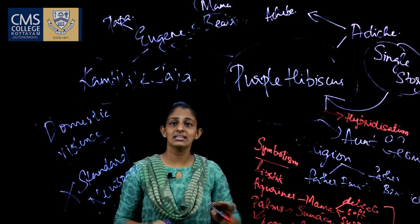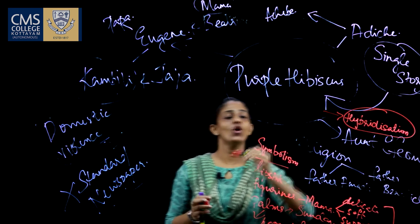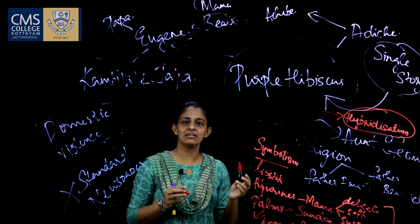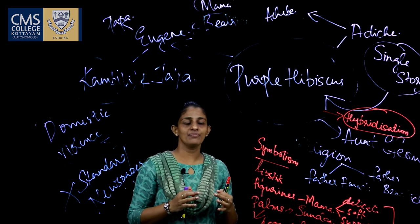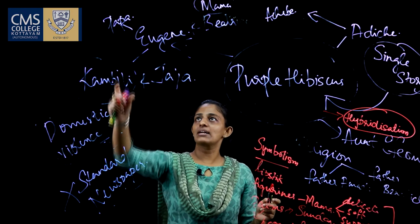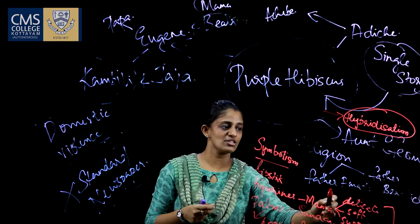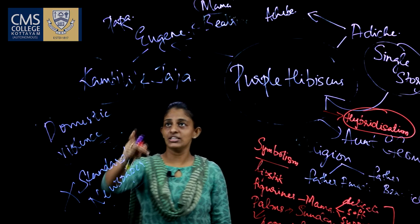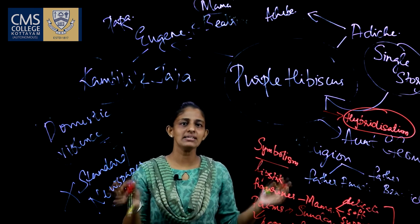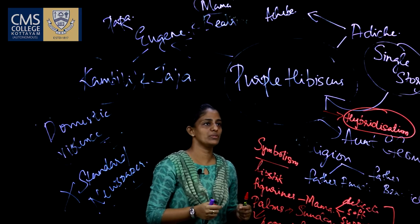The entire novel is based on this major aspect of hybridization. What is hybridization? Hybridization is basically a mixture of two cultures, as present in this novel and as Adichie explains it. You can see there are two cultures here — Papa and Aunt Ifeoma, the religious beliefs of Father Amadi and Father Benedict, Eugene's children and Aunt Ifeoma's children. In many things you can see that there is a hybrid culture which is present in this particular novel.